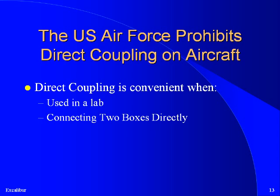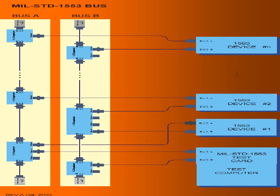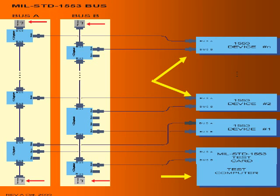Direct coupling is never used on aircraft, but can be used in a laboratory test environment. This is a diagram of a 1553 network. The network contains a bus controller shown as a test card and a number of RTs. On the far left is bus A with terminators on the very top and bottom, and a number of couplers in the middle. Each coupler contains one or more stubs, and each stub can be used to connect to a different RT. Each device has two connection points — one for bus A and one for bus B — and each connection is made using a twisted shielded pair cable.